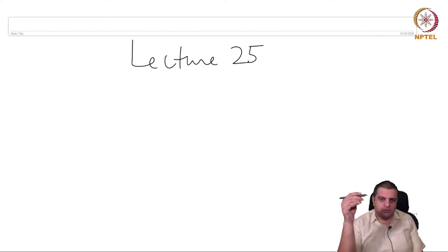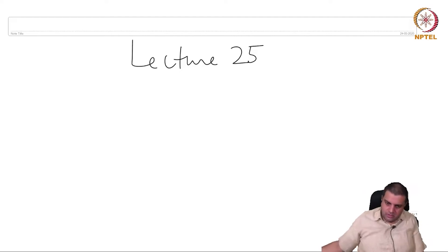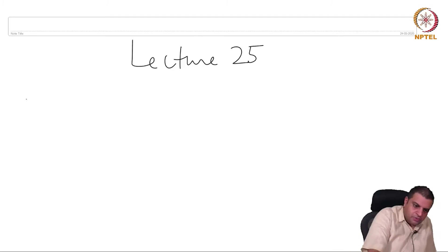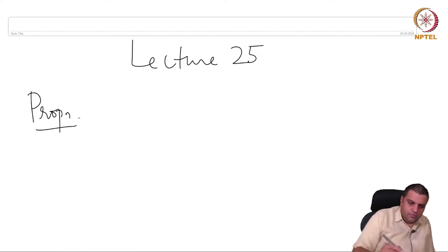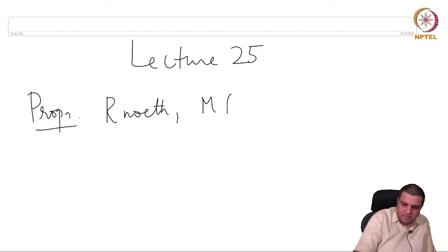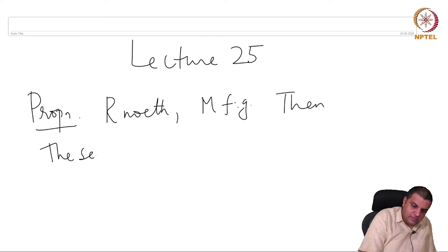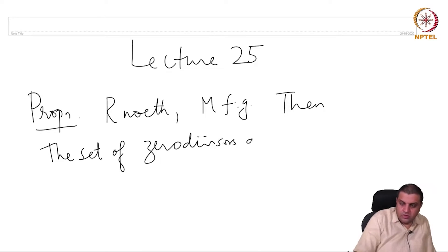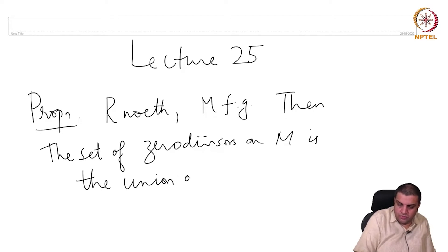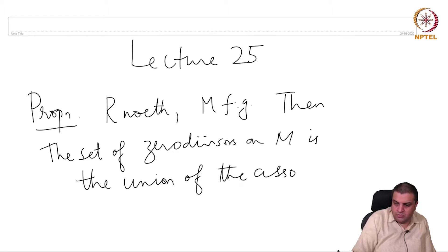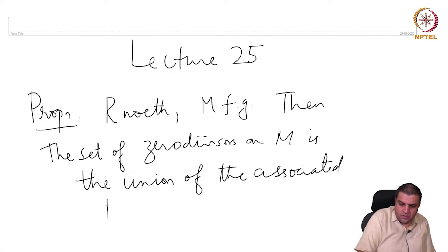We discuss a few more properties about associated primes in this lecture. Here is a proposition: let R be Noetherian and M finitely generated, then the set of zero divisors on M is the union of the associated primes of M.